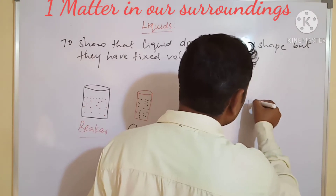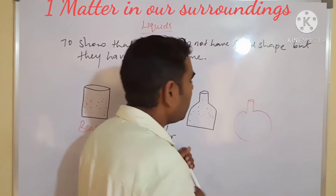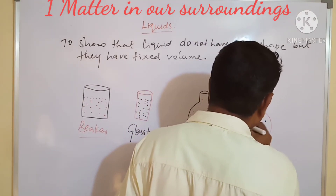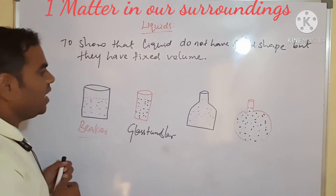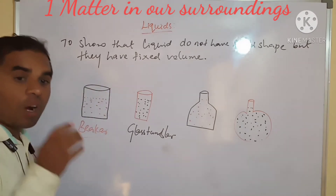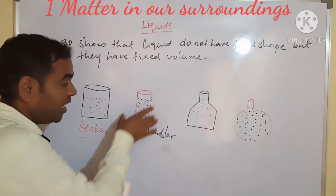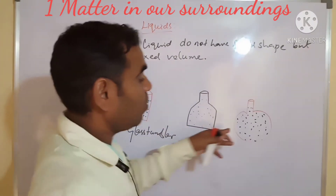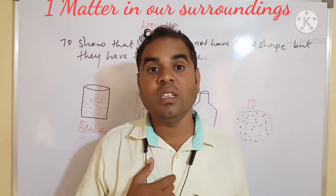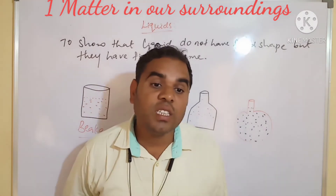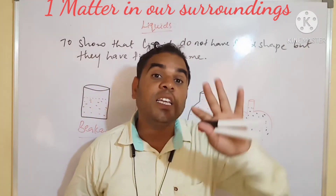We have to take the round-bottom flask. See, in the round-bottom flask also, a liquid takes the shape of its container. It doesn't have any fixed shape — it takes the shape of its container. See, that's why, to show that liquid does not have a fixed shape but they have a fixed volume. Volume is the same, but their shape is changing.